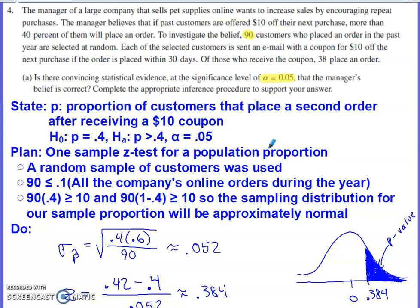To use this inference procedure, certain conditions must be satisfied. First, randomness: 90 customers who placed an order in the past year are selected at random. Second, independence is maintained as long as the sample size (90) is less than or equal to 10% of the full population. The population is all customers who made an order within the past year. As long as more than 900 people placed an order, and the fact that this is a large company implies this is the case, the 10% condition is maintained.